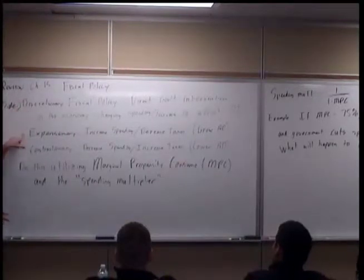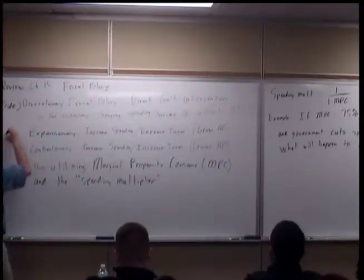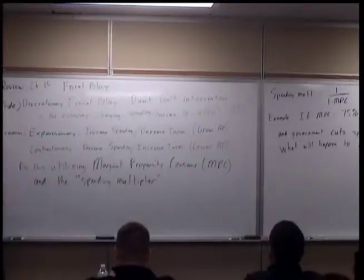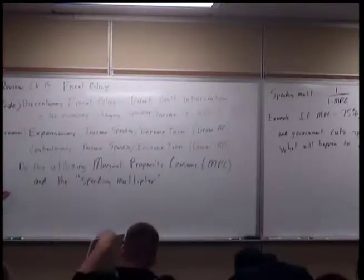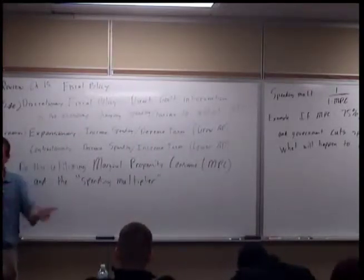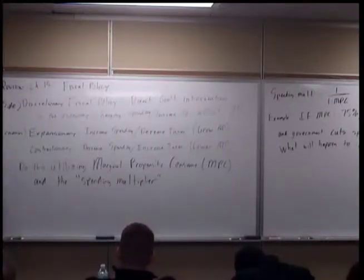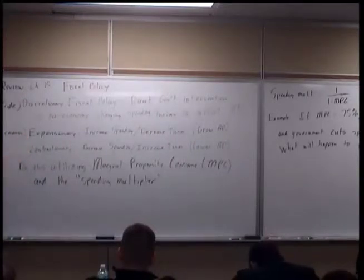There are two parts. When we're practicing expansionary fiscal policy we're trying to grow aggregate demand, and the idea is to fight recessions — growth in aggregate demand is what will get us out of a recession. When we're in a recession and we get growth in aggregate demand, we'll see GDP start to rise and employment start to go up. Normally consumers don't accomplish that — it's the government that does it.